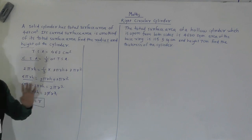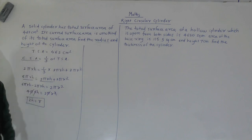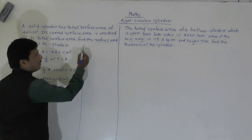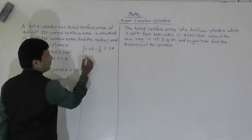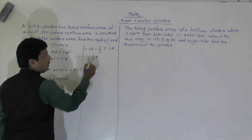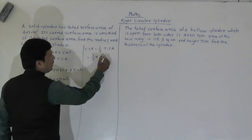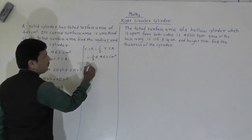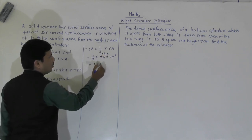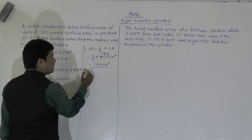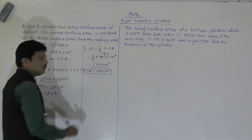Now what is given here? Curved surface area is equal to one-third of its total surface area. So curved surface area is equal to one-third multiplied by total surface area, which is 462 cm². So dividing: 462 divided by 3 gives us 154 cm². So CSA we got here as 154 cm².